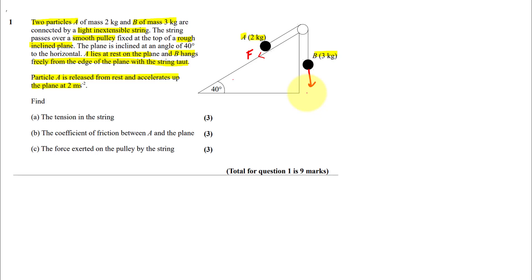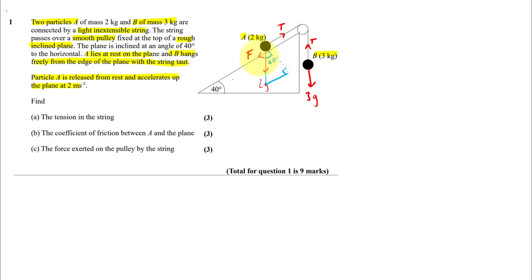We have 3g acting on B and 2g acting on A. Tension acts towards the pulley. Resolving parallel and perpendicular to the plane: the angle at the plane is 40 degrees, so the component perpendicular to the plane is 2g cos 40 and the component parallel to the plane is 2g sin 40.